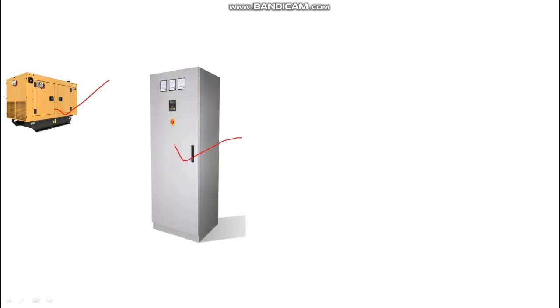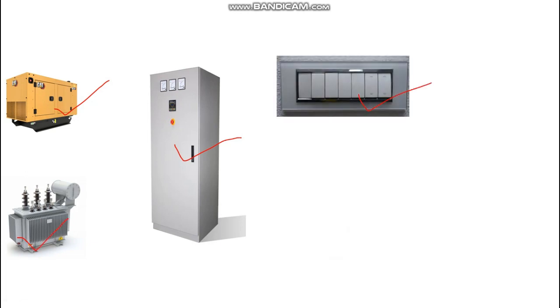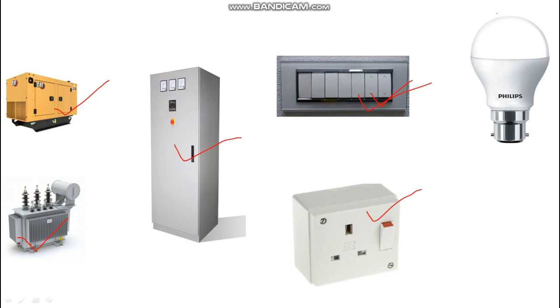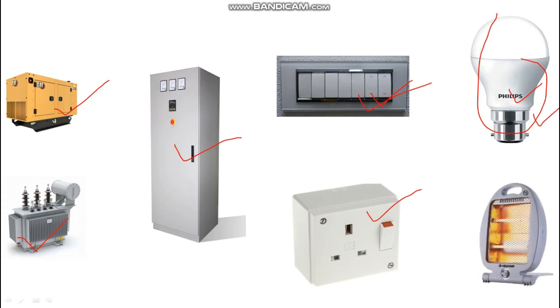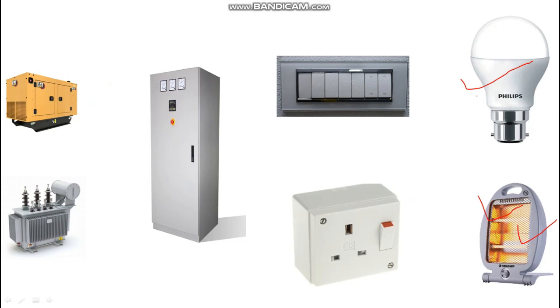Now here, as you can see, how power transfers through a cable. This is the source of power generation — this is the DG, and another one is the main panel, you can say ATS panel. This is the transformer, and this is the switchboard power socket, and through this switchboard we are going to operate this bulb — an electrical device — and this is the electric heater.